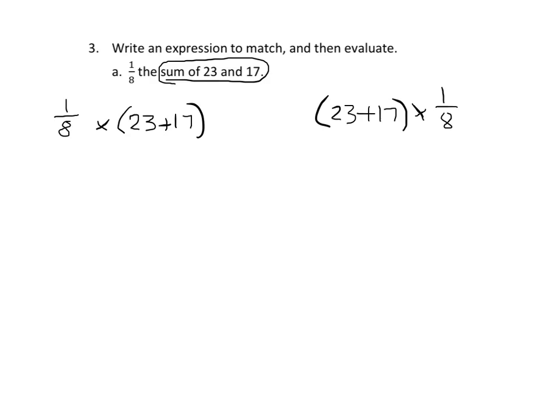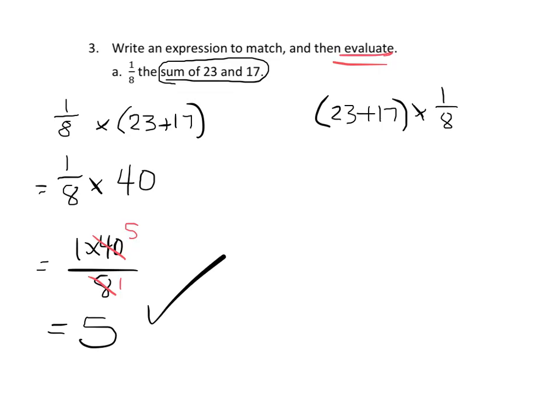So now we have to evaluate. So we're going to figure out what that is equal to. And it doesn't matter which one we use, because they're identical. So let's use this one, because that's what I wrote. So it's going to be one-eighth times. Now we have to add. And we get 40. And so that is equal to one times 40 over eight. And we can see that 40 and eight are each divisible by eight. So that gives us five over one, and five and one. So one times five is five over one. And so the answer is five.